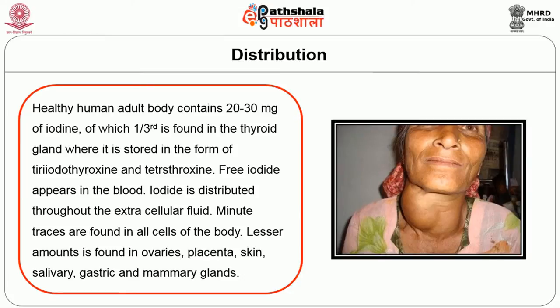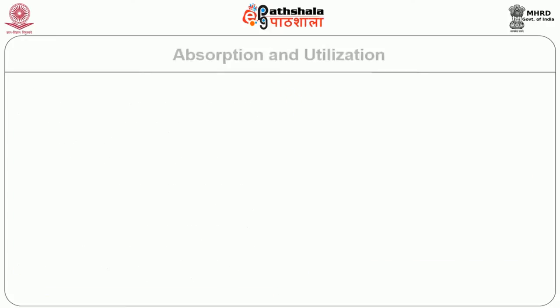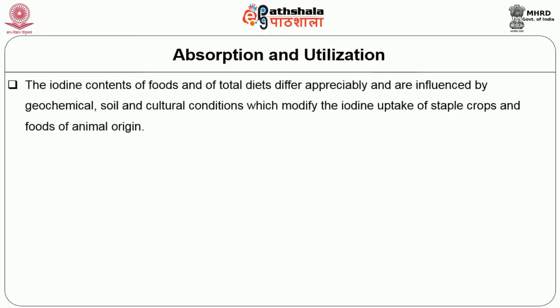Iodide is distributed throughout the extracellular fluid, and minute traces are found in all cells of the body. Lesser amounts are found in ovaries, placenta, skin, salivary, gastric and mammary glands. The iodine content of foods and total diets differ appreciably and are influenced by geochemical, soil and cultural conditions, which modify the iodine uptake of staple crops and foods of animal origin.